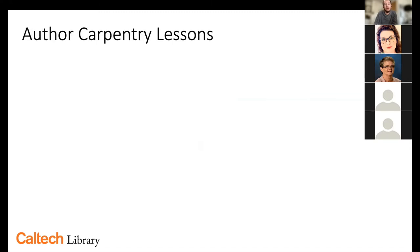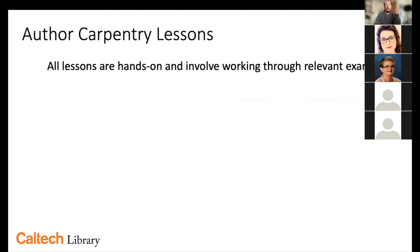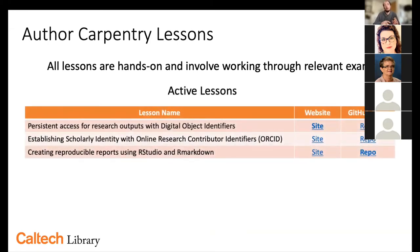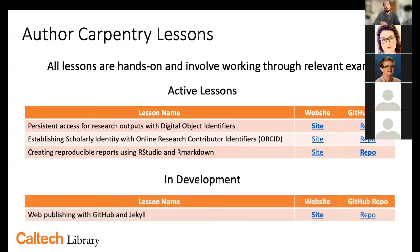All lessons are hands-on, with specific relevant examples applicable to researchers. By the end of each lesson, researchers can take something away they can use daily. We have three active lessons taught multiple times: one on persistent access to research outputs with Digital Object Identifiers (DOIs); one on scholarly identity with ORCID; and a longer workshop on creating reproducible reports with RStudio and R Markdown. We also have a lesson in development on web publishing with GitHub and Jekyll.